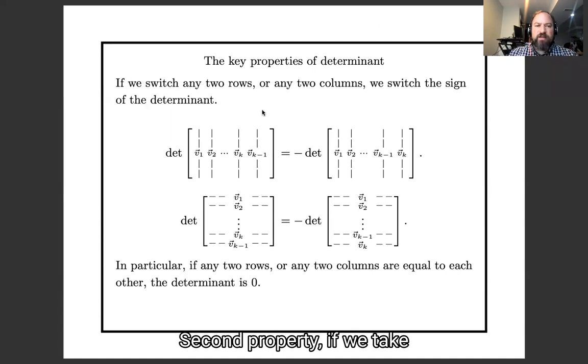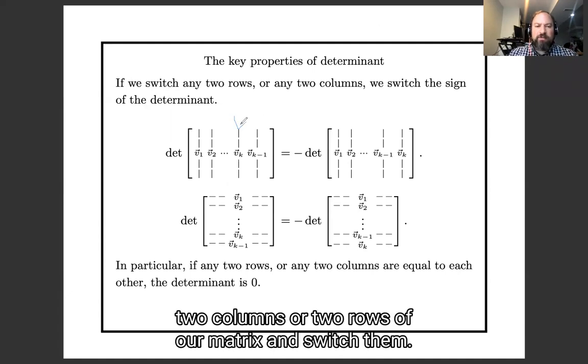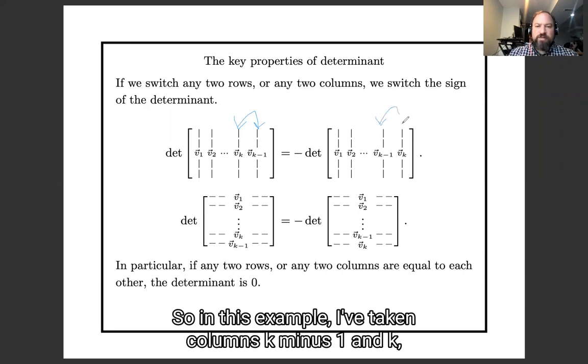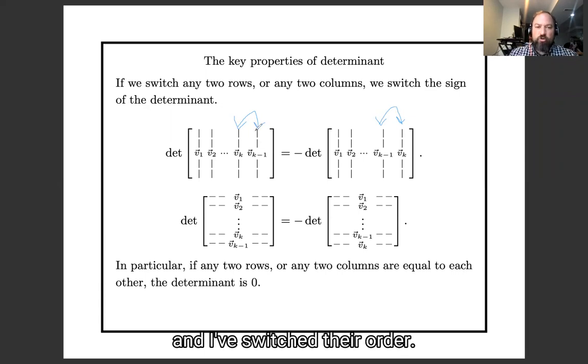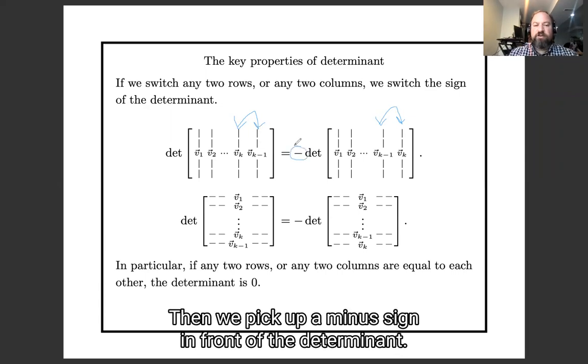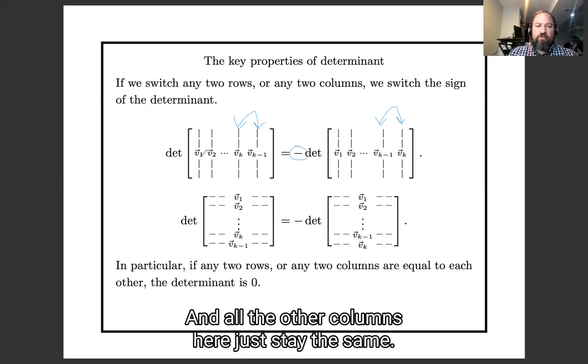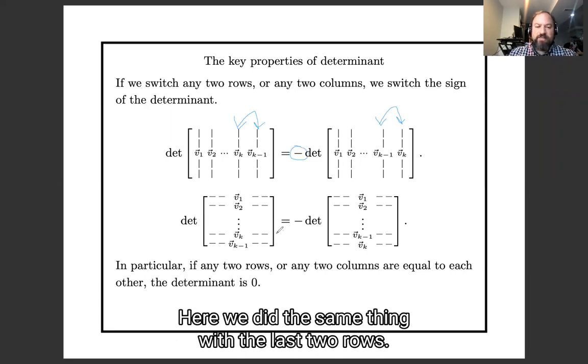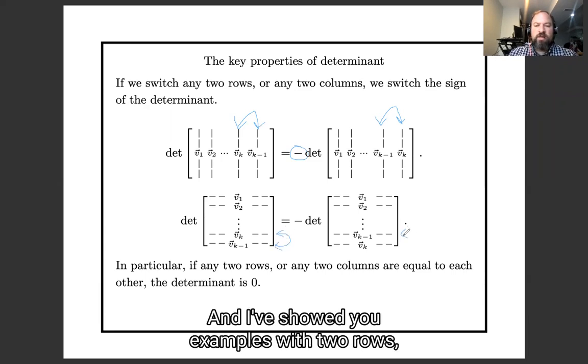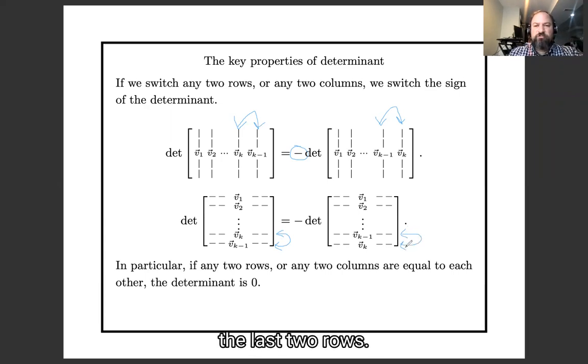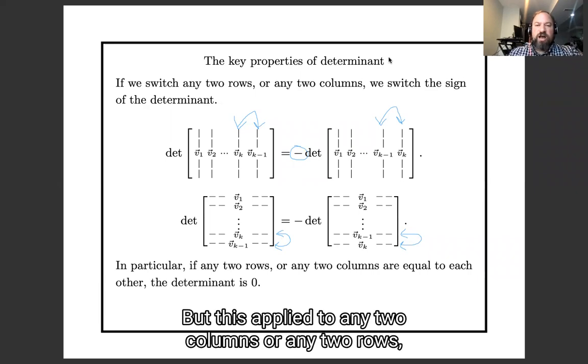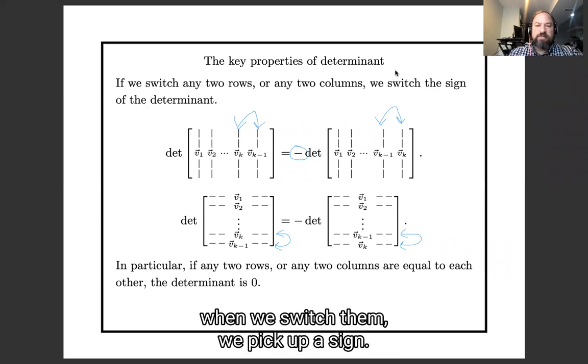Second property, if we take two columns or two rows of our matrix and switch them. So in this example, I've taken columns k minus 1 and k, and I've switched their order, then we pick up a minus sign in front of a determinant. And all the other columns here just stayed the same. Here we did the same thing with the last two rows. And I've showed you examples with the last two columns and the last two rows, but this is right for any two columns or any two rows. When we switch them, we pick up a sign.